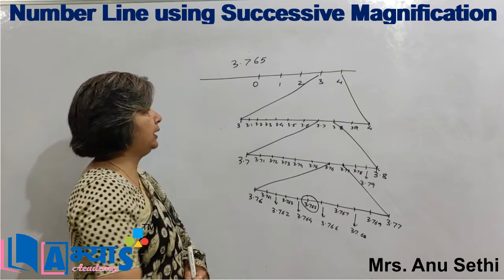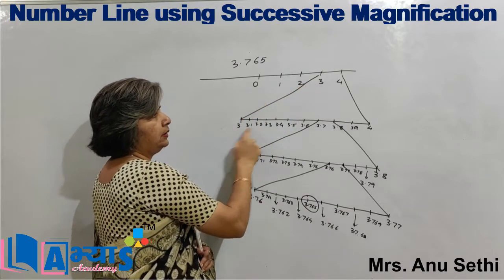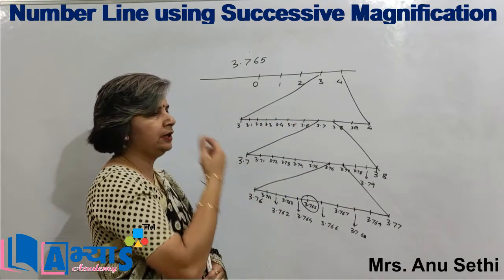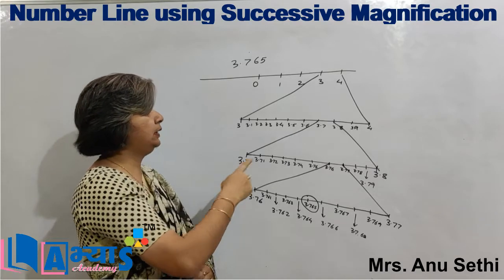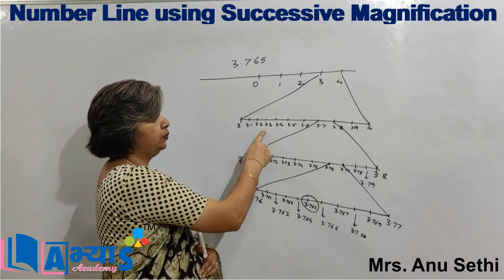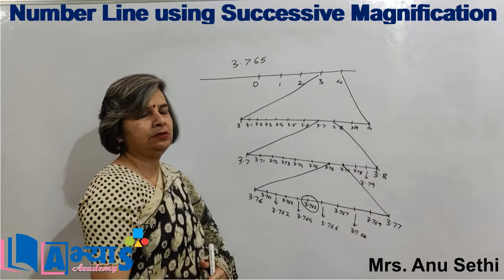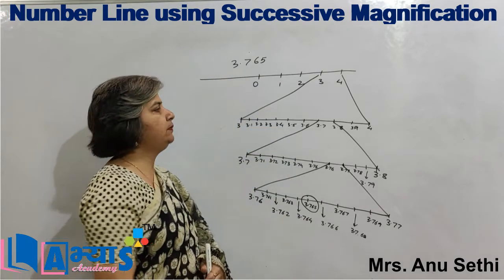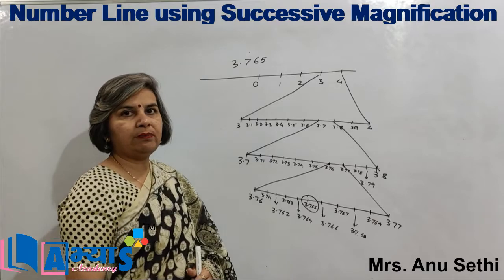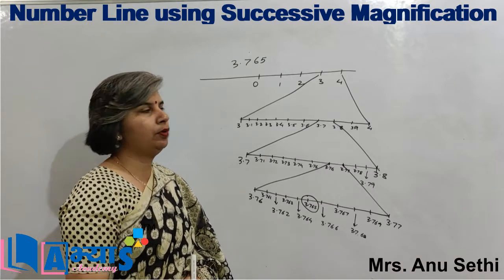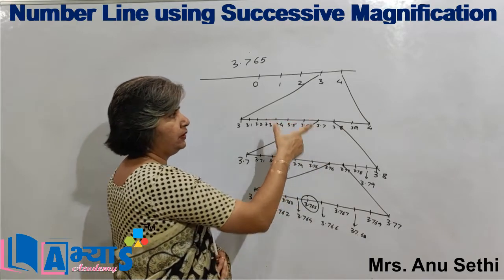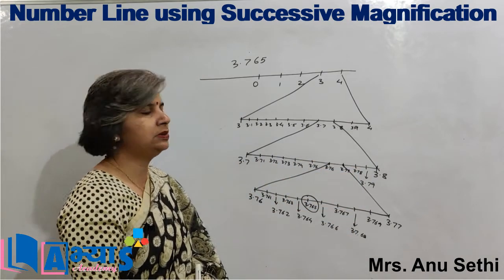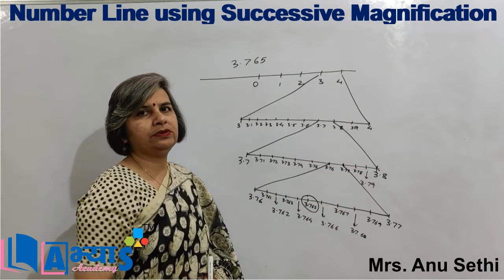I magnified this area, placing 3 here and 4 here, and divided the number line into 10 divisions — 3.1, 3.2, 3.3 through 3.9, and then 4. Now the number 3.765 lies between 3.7 and 3.8 because it is greater than 3.7 but less than 3.8. So I magnified that area the same way, with 3.7 on one end and 3.8 on the other, divided into 10 divisions.